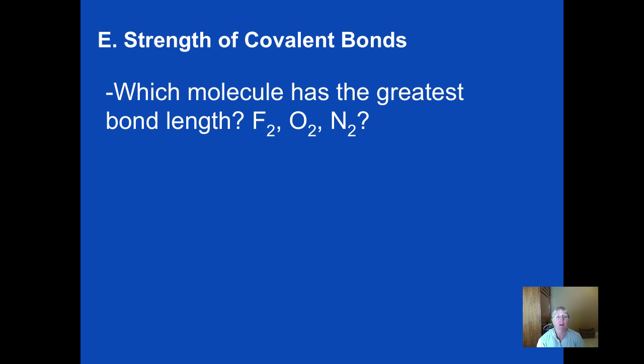But if you look at these three molecules right here you have to know how to draw Lewis structures to be able to figure out fluorine has a single bond, oxygen has a double, and nitrogen has a triple. So as we try to logic out on a test question who would have the greatest bond length it's the one with the fewest number of bonds. It would be in this particular case the fluorine.